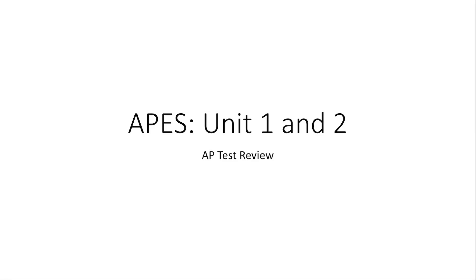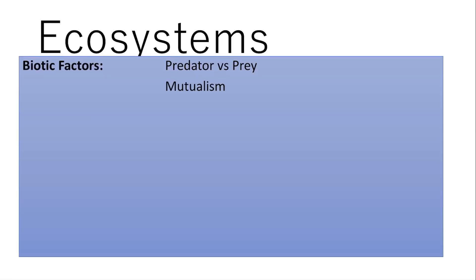Remember that all ecosystems have living and non-living things. Biotic factors are those that are living. Predator and prey — the predator eats the prey for food. We're also going to look at another biotic relationship: mutualism, which is when both benefit, like a bee and a flower.